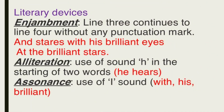Literary devices used in stanza 5: Enjambment — line 3 continues to line 4 without any punctuation mark: 'and stares with his brilliant eyes / at the brilliant stars.' Alliteration — use of sound 'h' in 'he hears.' Assonance — use of 'i' sound in 'with his' and 'brilliant.'